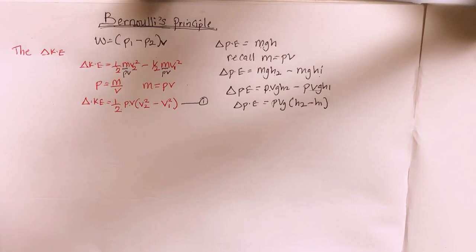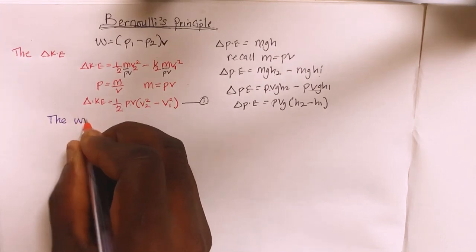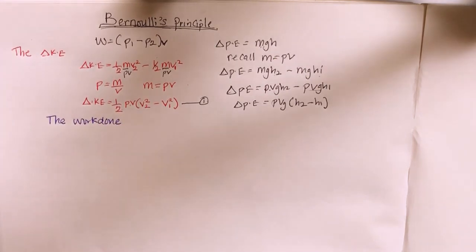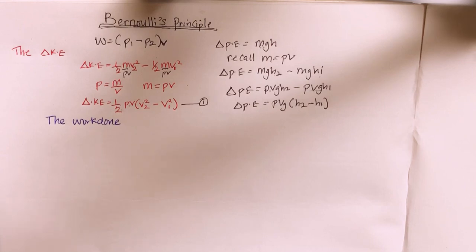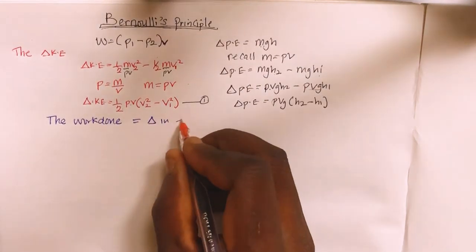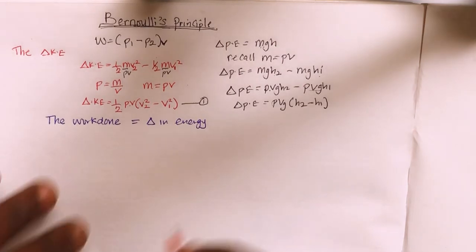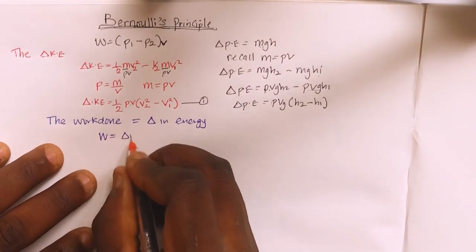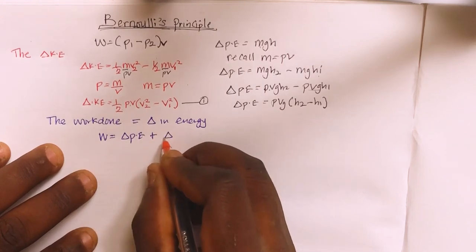Now, to obtain the total work done, the total work done is equal to the change in potential energy plus the change in kinetic energy. The total work done by the fluid equals the total change in kinetic energy plus the total change in potential energy.